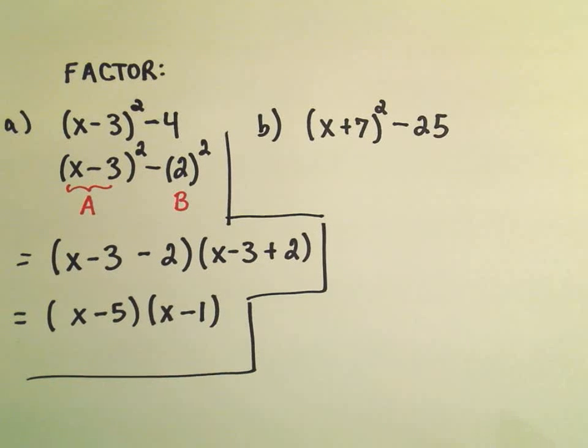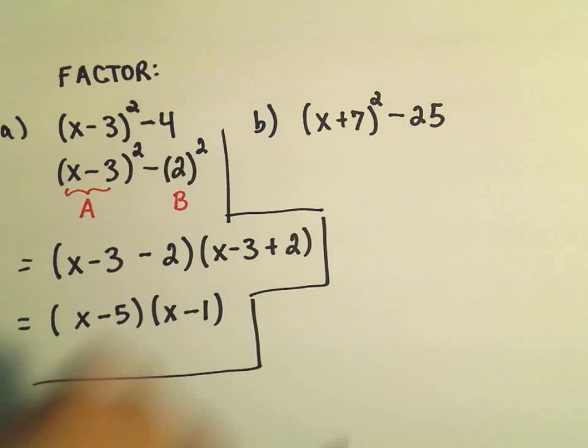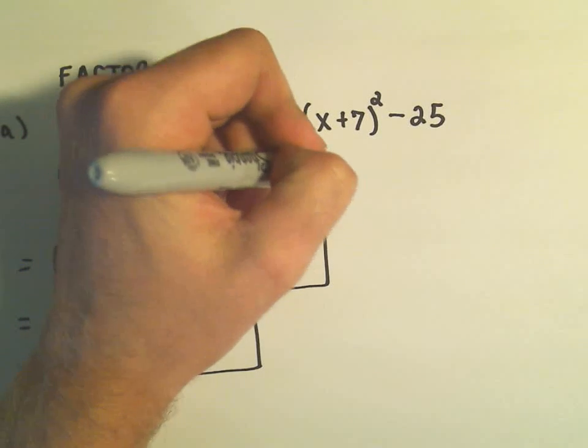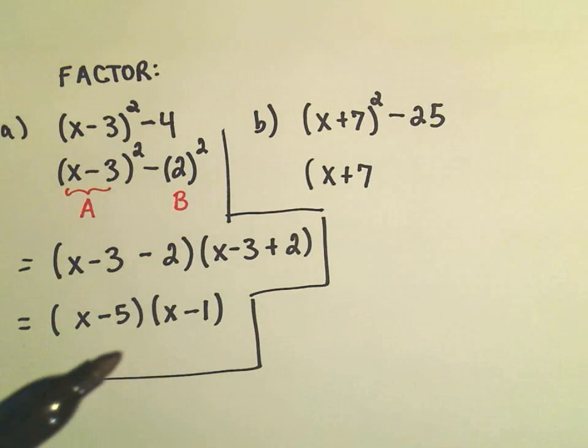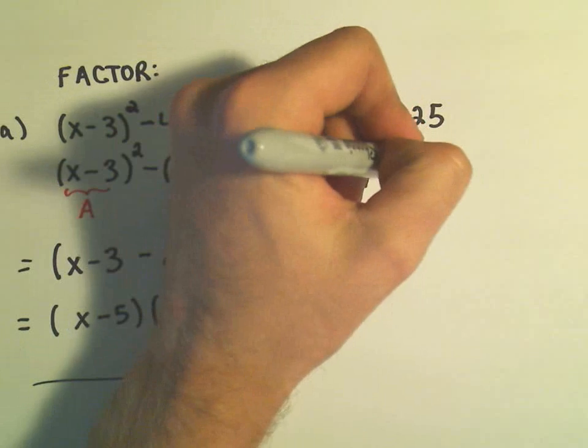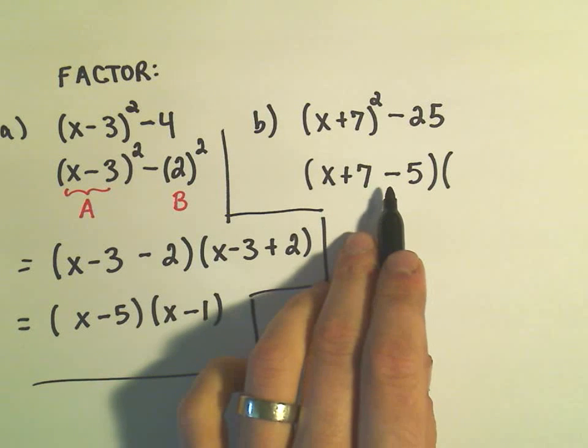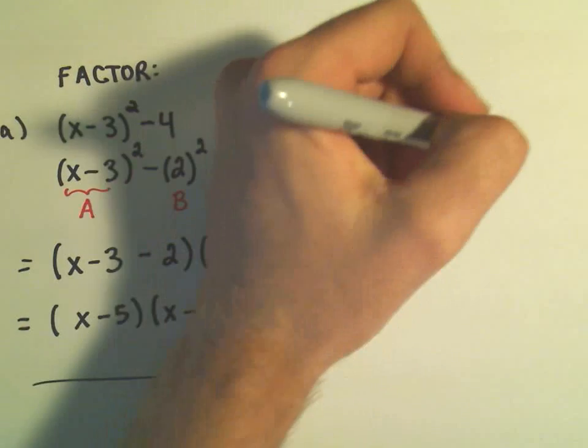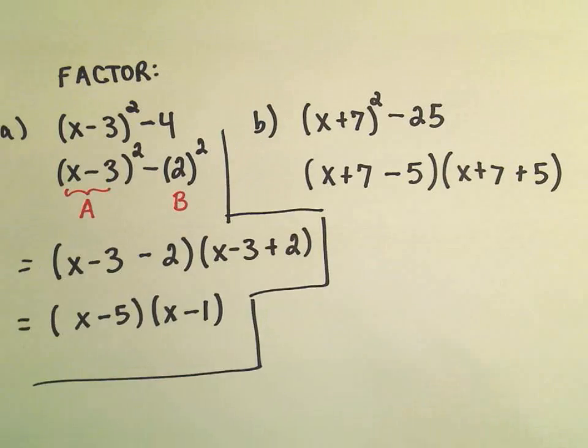We can do the same thing here in our other example. We have x plus 7 squared minus 25. In the first set of parentheses, I'm going to have x plus 7, there's my a term, and then minus our b term. If you take the square root of 25, we just get 5. Then I just do the same thing except I change this negative into a positive. So x plus 7 plus 5.